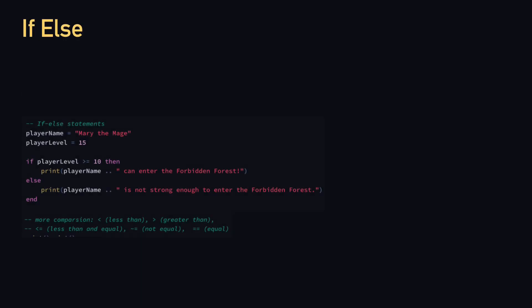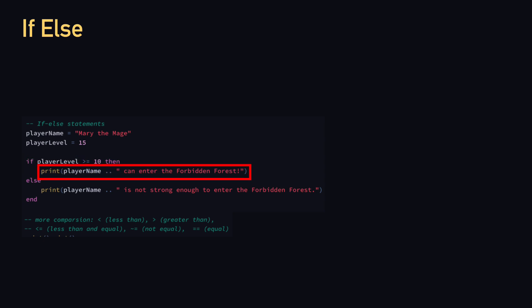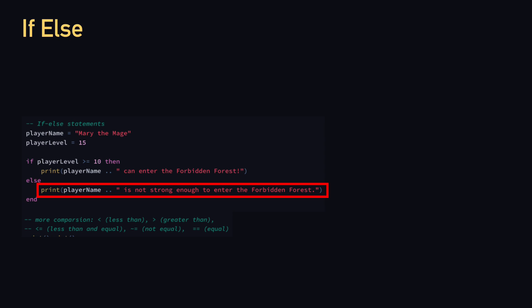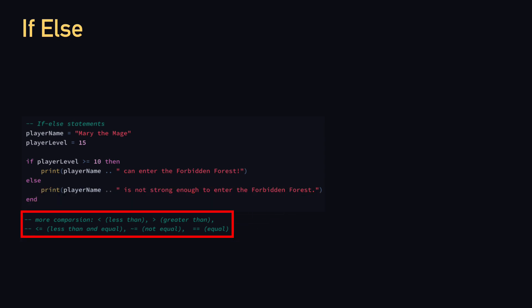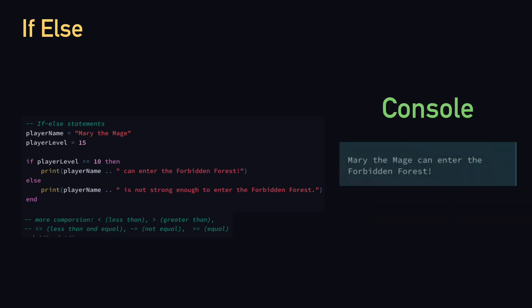The next thing we're going to do is conditional statements. In this example, we have a player called Mary the Mage, and Mary has a level of 15. The if statement allows us to check a condition. The condition we want to check is if Mary's level, which is 15, is greater than or equal to 10. If it is, then Mary can enter the forbidden forest. If her level is less than 10, she's not strong enough. We also have comparison operators: less than, greater than, less than or equal to, not equal to, and equal to. Running the project, we can see Mary can enter the forbidden forest because her level is 15, which is greater than or equal to 10.